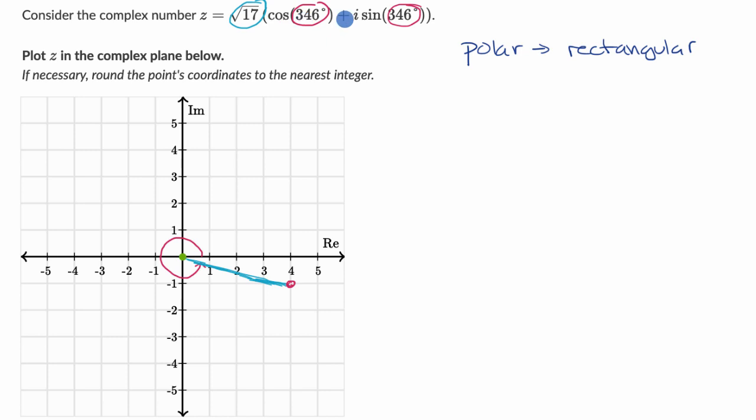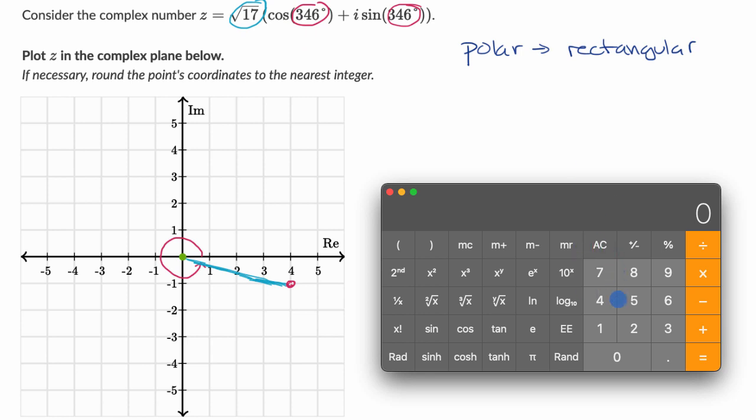But let's actually get a calculator out and see if this evaluates to roughly four minus one i. So for the real part, let's go 346 degrees. And we're going to take the cosine of it, and then we're gonna multiply that times the square root of 17.